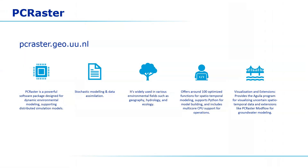One of the available processing provider plugins is the PCRaster Tools plugin, which provides a link between the PCRaster software and QGIS. PCRaster is a powerful software package designed for dynamic environmental modeling, supporting distributed raster-based simulation models. Its Python framework also allows for stochastic modeling and data simulation. It's widely used especially in hydrology and ecology. Its over 100 optimized functions available through Python are useful for building models and also for map algebra analysis. PCRaster also comes with its own visualization tool Aguila, and it has extensions for linking, for example, PCRaster to MODFLOW for groundwater modeling.